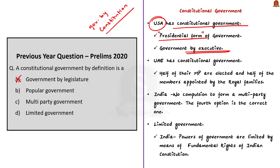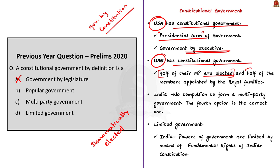Moving on to the second option: popular government. Popular government is a democratically elected government. However, this option is not always the case when it comes to constitutional government. For example, in UAE, half of their MPs are elected and half are appointed by the royal families. So popular government is not fully fitting and we can eliminate this option also.